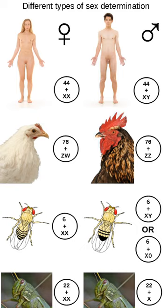In the XX-X0 variant of the XY system, females have two copies of the sex chromosome but males have only one. The zero denotes the absence of a second sex chromosome. Generally in this method, the sex is determined by the amount of genes expressed across the two chromosomes. This system is observed in a number of insects, including the grasshoppers and crickets of order Orthoptera and in cockroaches.